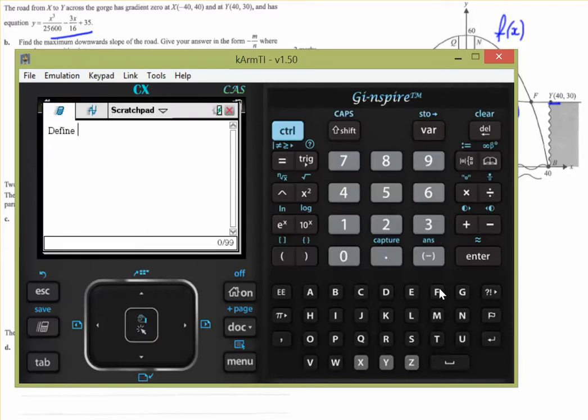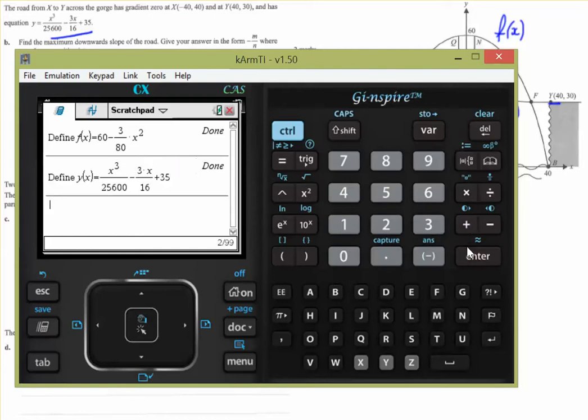So, let's define those functions again. Calculate. We had the first one, which was the parabola. Which was f of x equals 60 minus 3 on 80 times x squared. And we have y of x equals x cubed divided by 25,600, minus 3 times x over 16 plus 35. There we are.